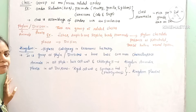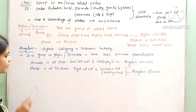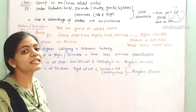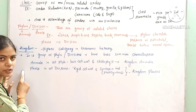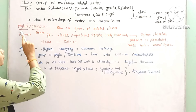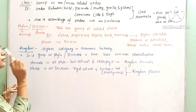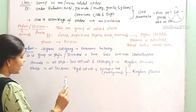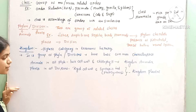Next is kingdom — the highest category in the taxonomic hierarchy. The lowest category is species, and the highest is kingdom. Kingdom is a group of related phyla and divisions which have basic common characters. For example, all animals are placed under kingdom Animalia.